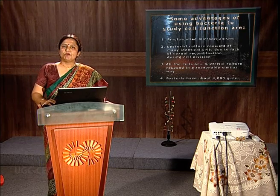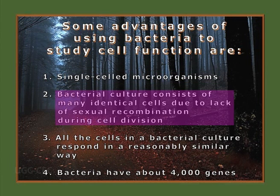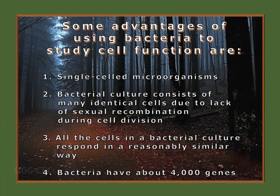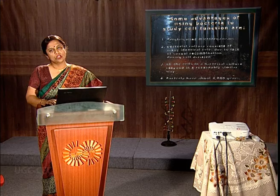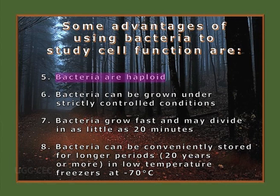The second important category among prokaryotes is bacteria. They are single-cell microorganisms with a homogeneous culture, and due to lack of sexual recombination there is a pure culture. All bacterial cultures respond in a similar way. Bacteria have almost 4,000 genes compared to 50,000 genes in eukaryotes, so the study is much easier, and they have haploid genomes.